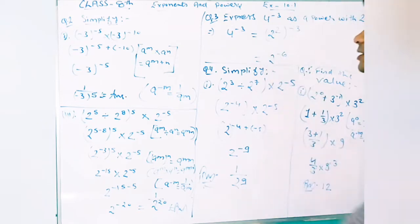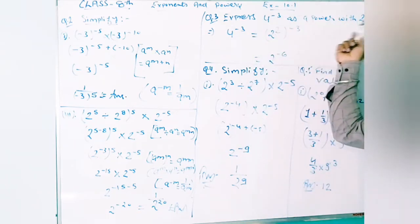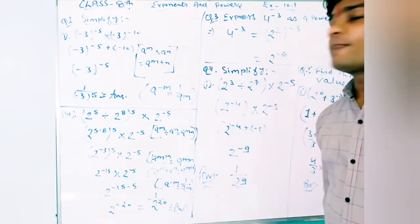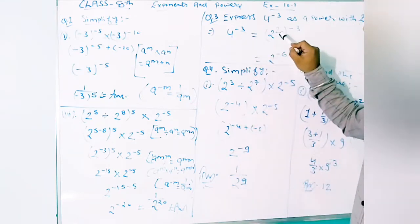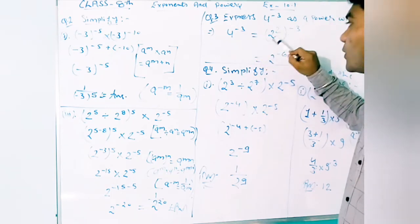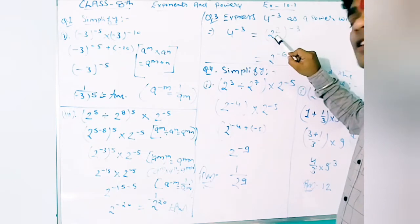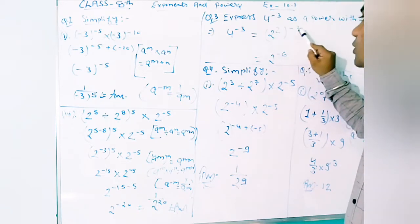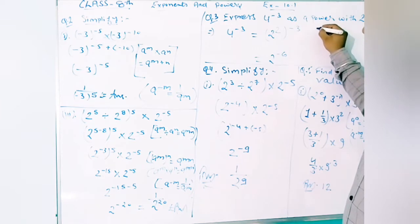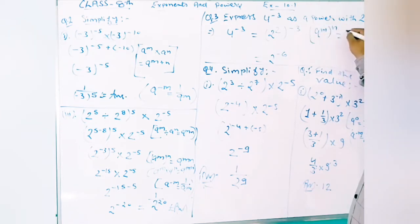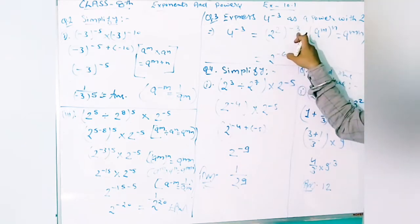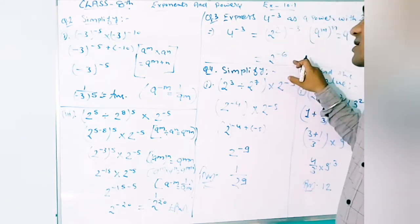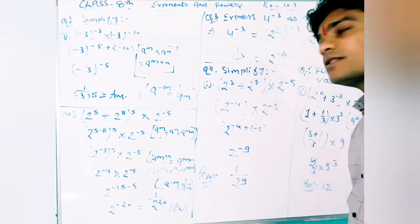Third question: express 4 raised to the power 3 as a power with base 2. We can write 4 as 2 squared, since 2 into 2 equals 4. So 4^3 becomes (2²)^3. Using the law (a^m)^n = a^(m×n), this gives 2 raised to the power 2 into 3, which is 2^6. So the answer is 2 raised to the power 6.